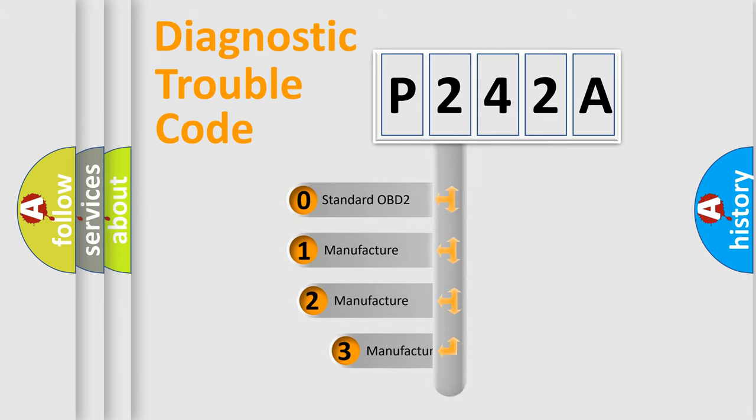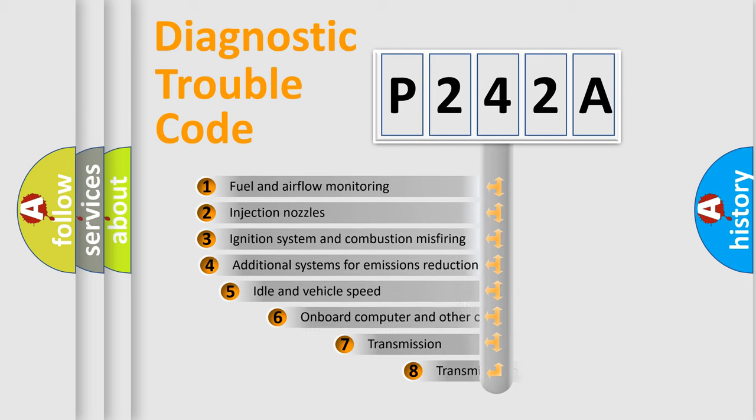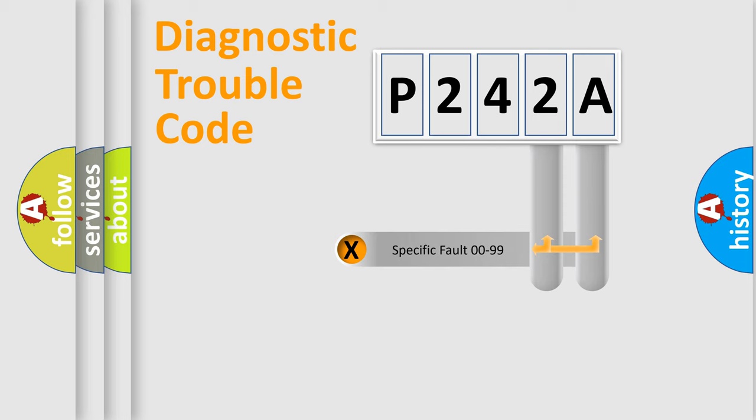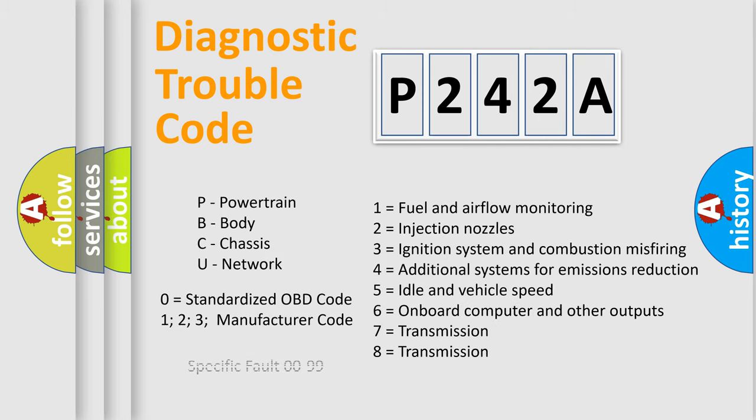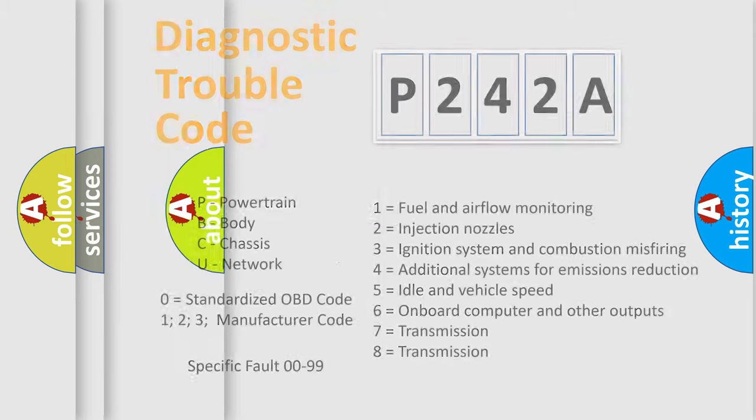If the second character is zero, it is a standardized error. In the case of numbers 1, 2, or 3, it is a manufacturer-specific error. The third character specifies a subset of errors. The distribution shown is valid only for standardized DTC codes. Only the last two characters define the specific fault of the group. This division is valid only if the second character code is zero.